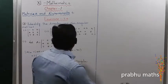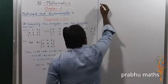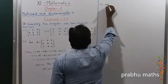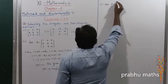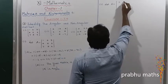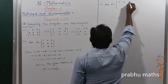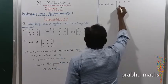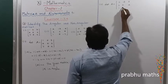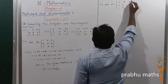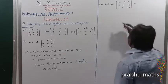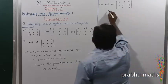Now let us take the Second Subdivision of the Third Sum. Consider matrix A equal to the determinant of the matrix with entries 2, minus 3, 5 in the first row; 6, 0, 4 in the second row; and 5, minus 7 in the third row. Next, find out det(A).